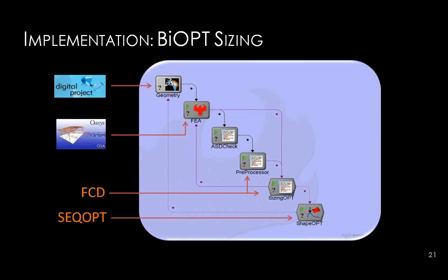In terms of implementation, geometry is managed in Digital Project, a parametric CAD tool using the CATIA engine, common in aerospace. You could substitute a different CAD tool more common to the building industry, such as Revit or Rhino. The finite element structural analysis tool used was GSA, a package developed by Oasys, with custom scripts written to check against building code requirements and the two optimization algorithms. This is a brief introduction — papers describing these methods in more detail are available.